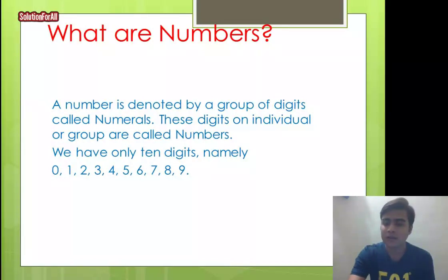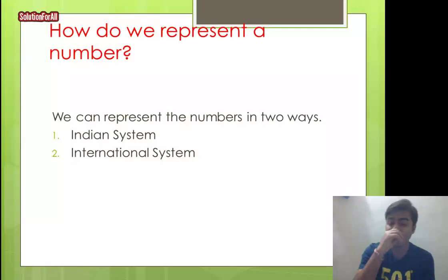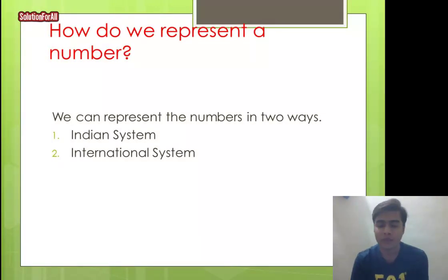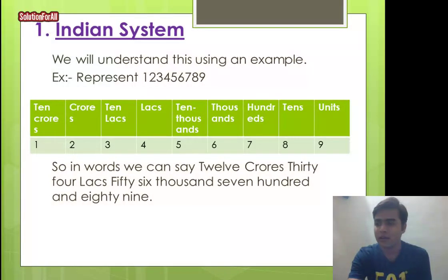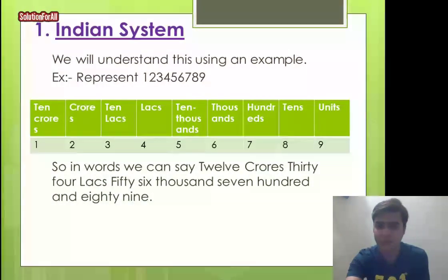Now we'll look at how to represent a number. Since we are Indian, we should also learn the Indian system. There are two ways of representing a number: the Indian system and the international system. In the Indian system, in Hindi we use terms like ikai, dahai, sakada, hasar, das hasar, lakh, das lakh, karor, das karor, arab, das arab — and in English: units, tens, hundreds, thousands, ten thousands, lakhs, ten lakhs, crores, and ten crores.